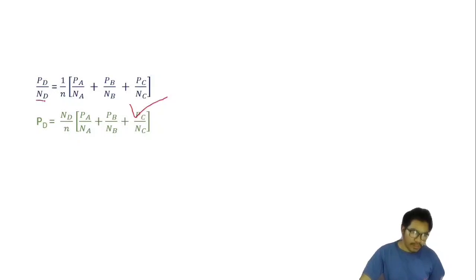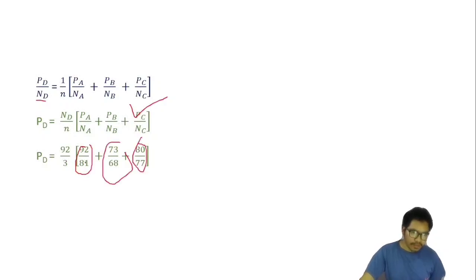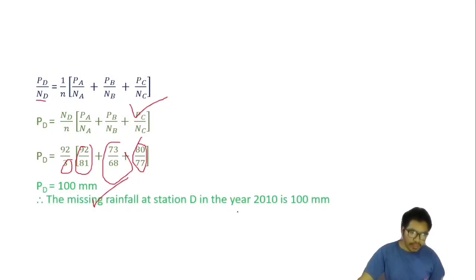So P_D = N_D / n × (P_A / N_A + P_B / N_B + P_C / N_C). With n = 3 and all values substituted, we get P_D = 100 mm. The missing rainfall at station D in the year 2010 is 100 mm.